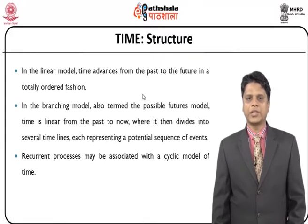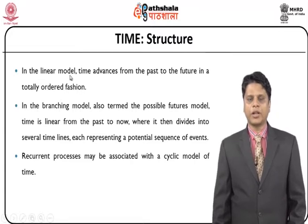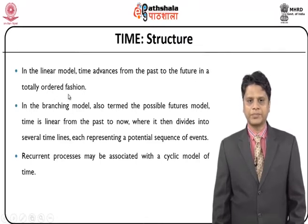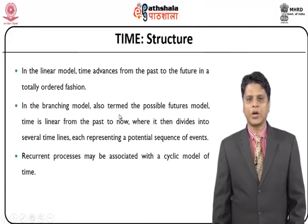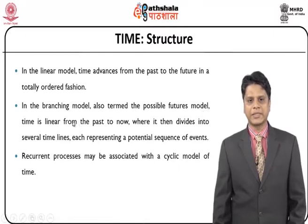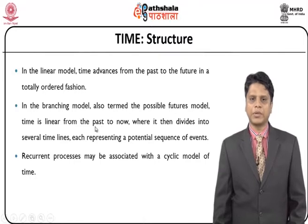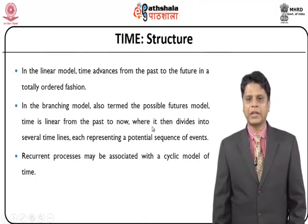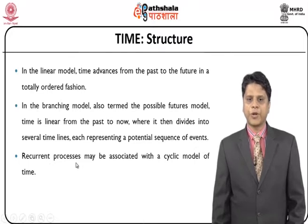We will look at more detail on the structure now. In case of a linear model, time advances from the past to the future in a totally ordered fashion. Whereas in the case of a branching model, also termed the possible future model, there will be many branches existing. Time is linear from the past to now, where it divides into several timelines, each representing a potential sequence of events. Recurrent processes may be associated with a cyclic model of time.